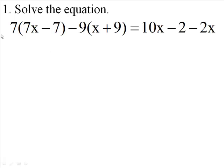Number 1, solve the equation: 7 times (7x minus 7) minus 9 times (x plus 9) equals 10x minus 2 minus 2x.